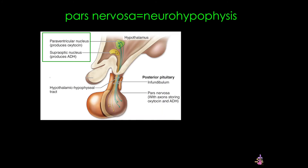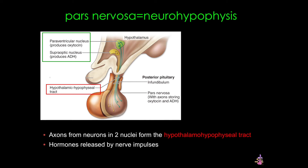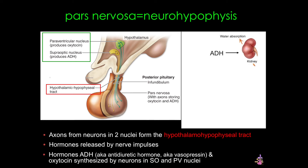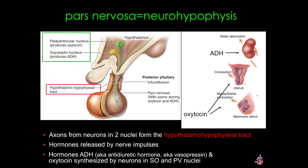The posterior pituitary gland does not produce hormones. Instead, hormones produced in the paraventricular and supraoptic nuclei — oxytocin and antidiuretic hormone respectively — travel via axons forming the hypothalamo-hypophysial tract through the infundibulum and terminate in the capillary plexus. The hormones are stored in secretory granules in the axon terminals in the pars nervosa and released by nerve impulses from those hypothalamic nuclei. Antidiuretic hormone controls water balance by concentrating urine through increased permeability of collecting tubules via aquaporins, and oxytocin causes uterine smooth muscle contraction at childbirth and targets myoepithelial cells in mammary glands to assist in milk letdown.